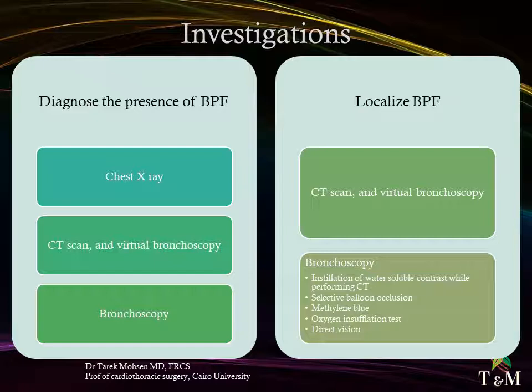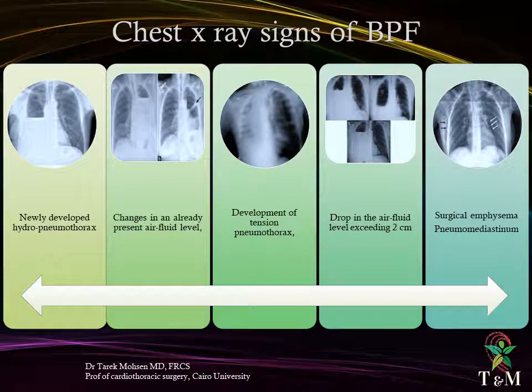Investigations are directed to confirm and localize the bronchopleural fistula. Diagnosis can be achieved through chest X-ray, CT scan, and virtual bronchoscopy or fiber optic bronchoscopy. Localization can be achieved via CT scan with water-soluble contrast instillation during sequential imaging, selective balloon occlusion, instillation of methylene blue through the chest tube, oxygen instillation at a flow rate of 2 to 4 liters per minute while watching for air leak, or direct visualization of the fistula.